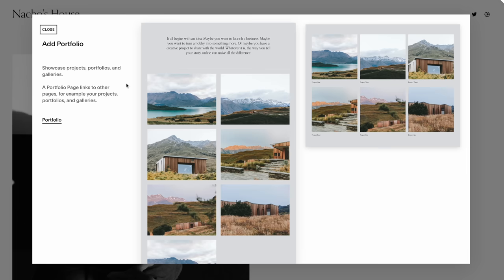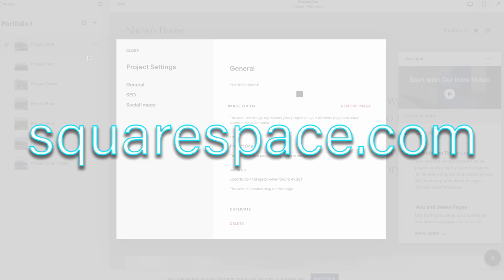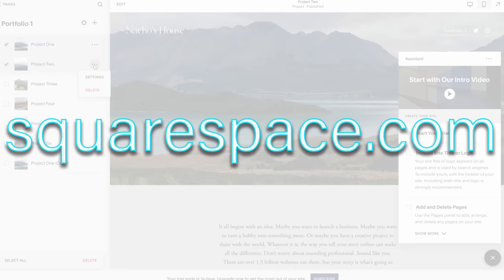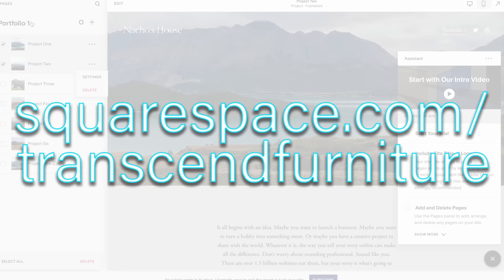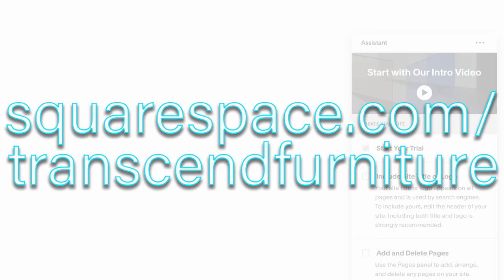Starting a website has never been easier. You can go to squarespace.com for a free trial, check things out and then when you're ready to launch your site go to squarespace.com slash transcend furniture and you can save yourself 10% off your first purchase of a domain or website.